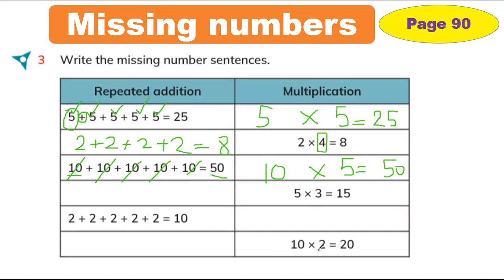Now let's choose this one. What is the first number? 10. How many times will I write 10? 2 times: 1 is already here, and this is the second. So 10 plus 10 equals 20. Because this is addition, we use plus. And in this way you can understand both addition and multiplication.